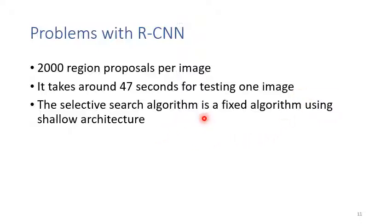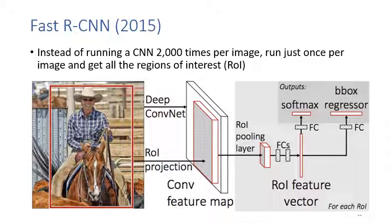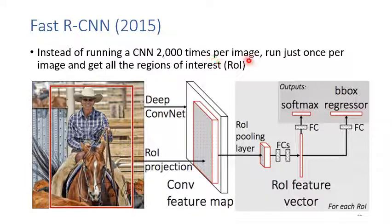As we know, region proposal is slow because we need to generate a lot of regions. Selective search generates around 2,000 region proposals per image, taking around 47 seconds for testing one image using a computer in 2016. Also, the selective search algorithm is a shallow, fixed traditional algorithm, so we cannot use deep learning to find object candidates. To improve the speed of RCNN, the authors proposed the second version called Fast RCNN. The major change is to run the CNN on the whole image once, then use selective search to find the ROI regions — instead of running CNN 2,000 times per image.